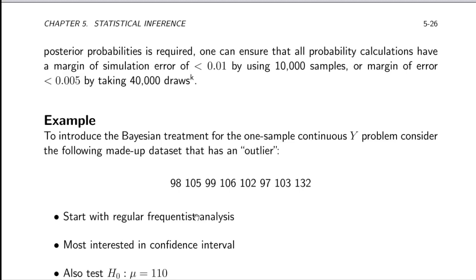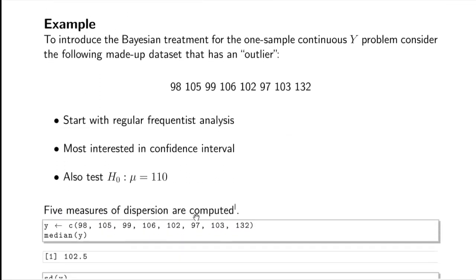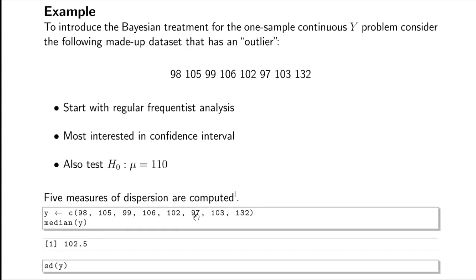Let's make this concrete with an actual example — a one-sample continuous measurement problem. Our raw data are listed, with values hovering around 100 and one outlier at 132 — an unexpected high value suggesting a heavy right tail and questioning normality. We'll start with the ordinary frequentist analysis, which will turn out not to be very robust to that outlier.